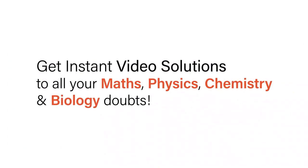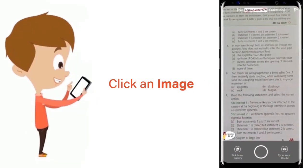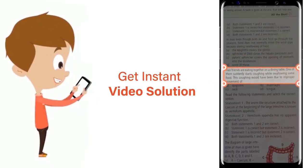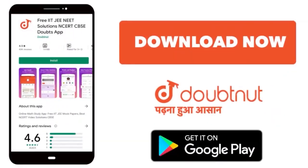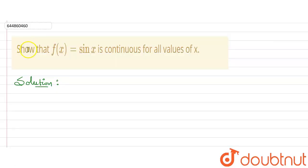With Doubtnut get instant video solutions to all your math, physics, chemistry and biology doubts. Just click the image of the question, crop the question and get instant video solution. Hello everyone, this question is given: show that f(x) equals sine x is continuous for all values of x.